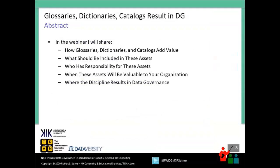The things I'm going to share with you today are about these three specific assets that are important to your organization: business glossaries, data dictionaries, and data catalogs. They all have different meanings to different companies, and I'll share the definitions I follow. We'll talk about how the glossaries, dictionaries, and catalogs can add value, what should be included in each of these assets, and who are the people that actually have responsibility — who might be the stewards of the metadata you're putting into these resources. We'll talk about when these assets become valuable, and then how the discipline associated with these assets results in data governance.